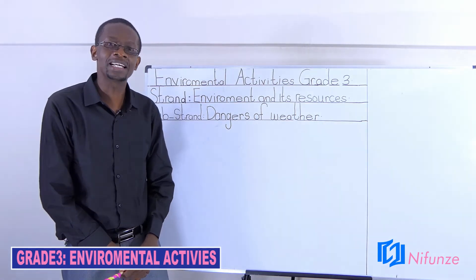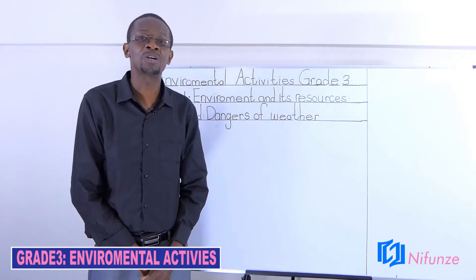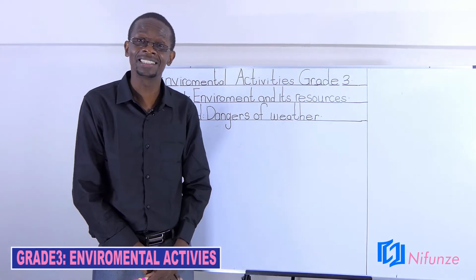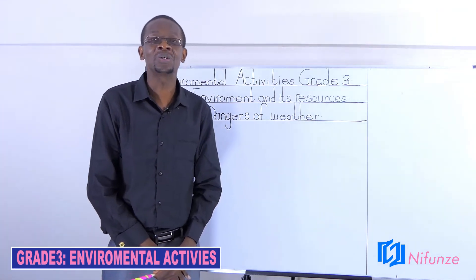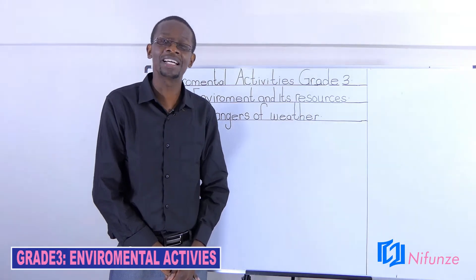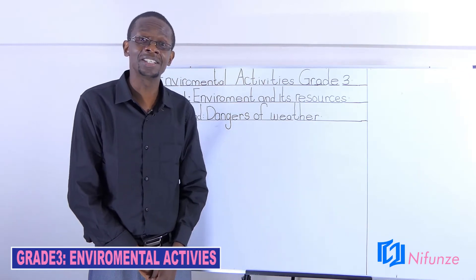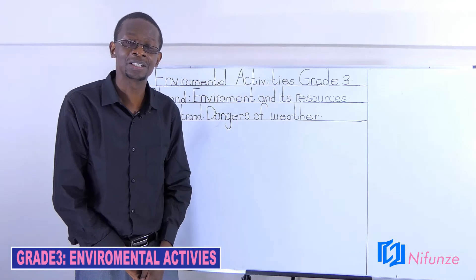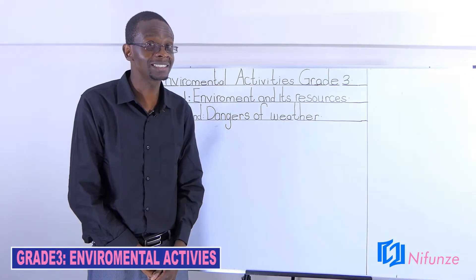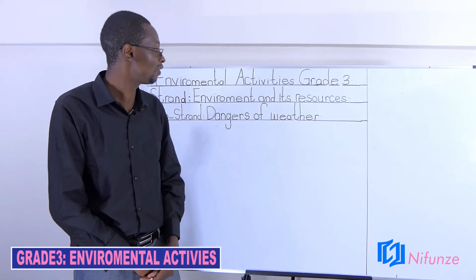You remember in grade 1 you learned about the types of weather. Can you name for me the types of weather that you learned in grade 1? Weather can be rainy, windy, and sunny. In grade 2 you remember you learned about what we do during different weather. During rainy season you plant your crops and during the dry season we harvest our crops. That's good. So today we are going to learn about the dangers of weather.